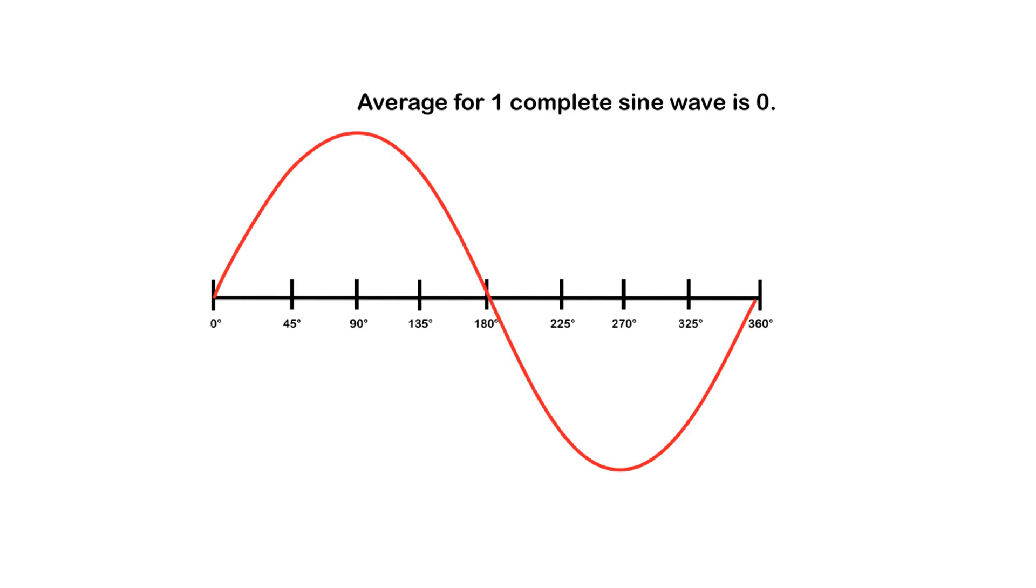So the average, this positive side, would actually cancel out the negative side, and the average for one complete sine wave will always be 0. So watch for that. If you ever ask for the average of one complete sine wave, it calculates out to be 0.